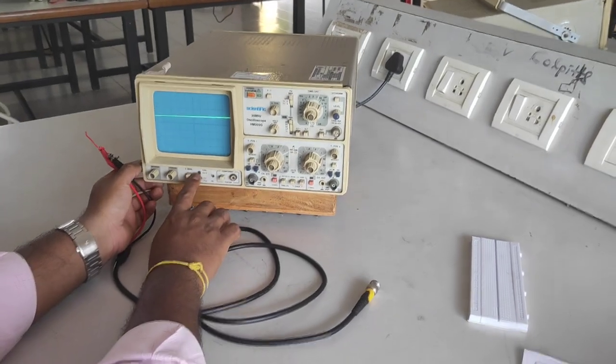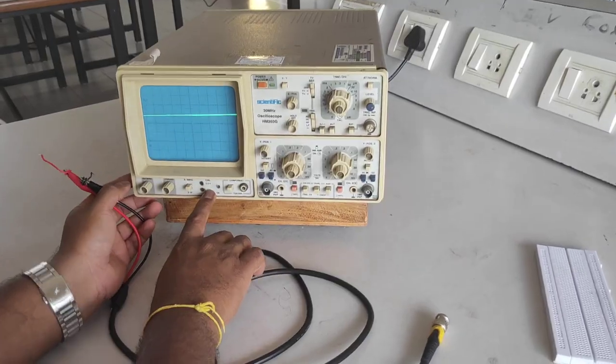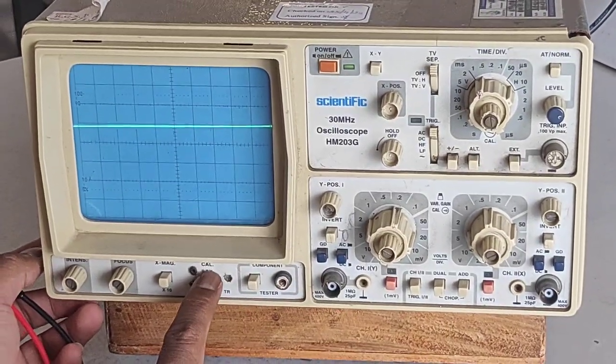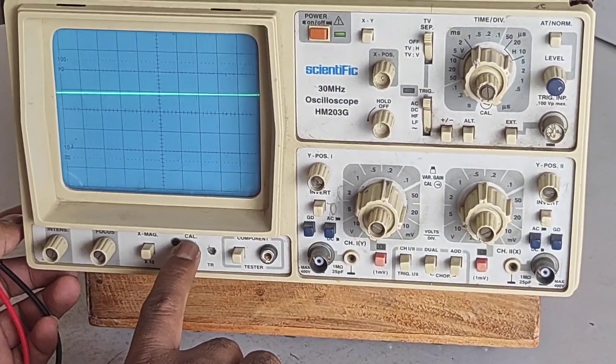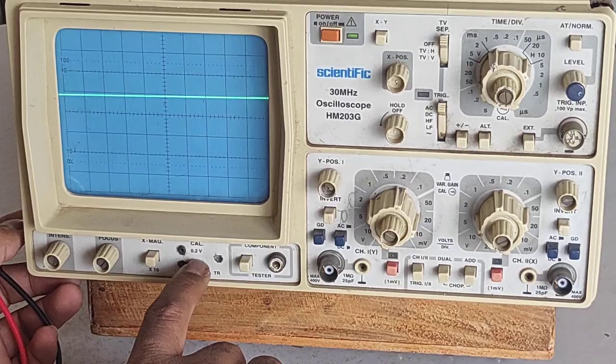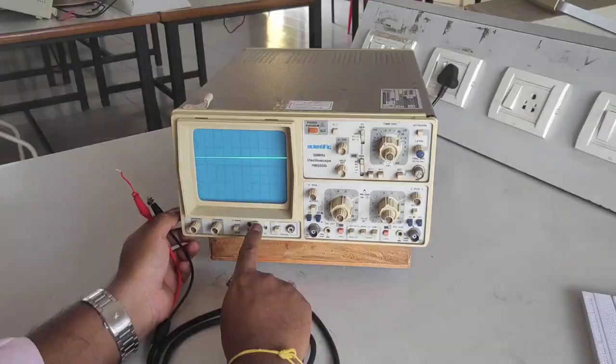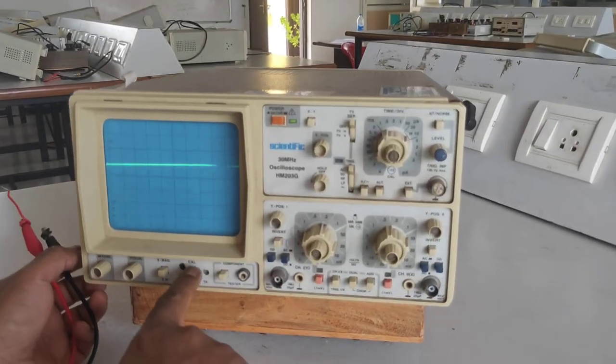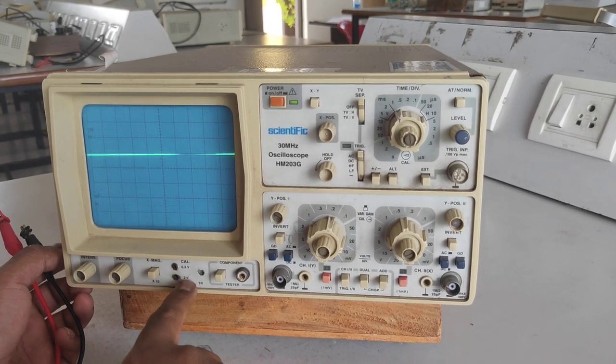On every oscilloscope, you can find calibration points available on the front screen. On every CRO, it will be mandatory - the company will provide this. The main purpose of why they have given this is to check whether your CRO is calibrated and whether it is giving accurate measurement. Before starting any measurement, if it is available, you check.